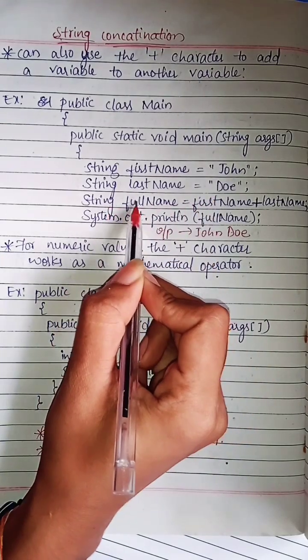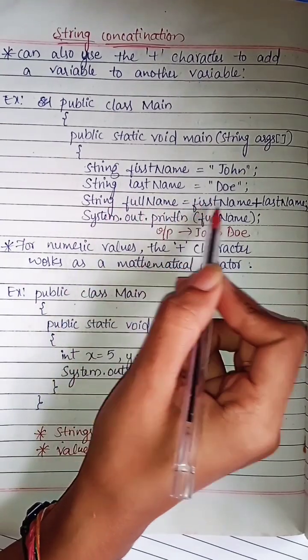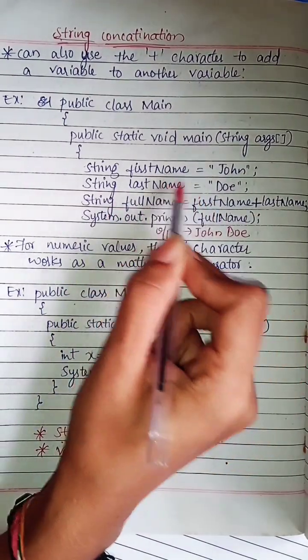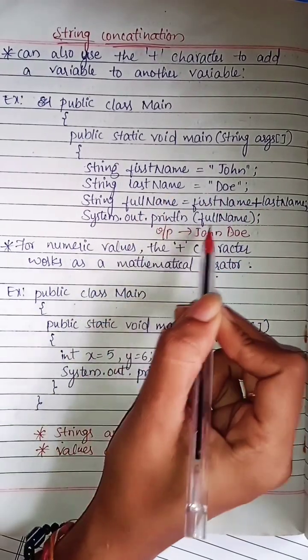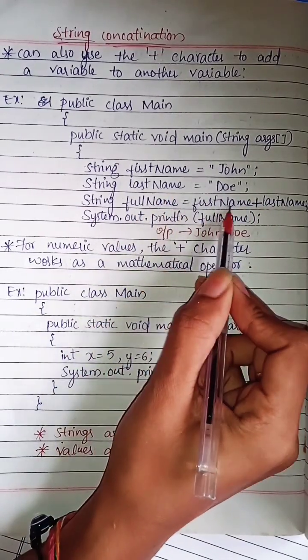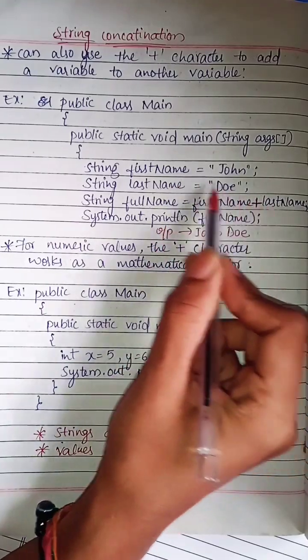is Doe. String fullName equals firstName plus lastName. firstName will refer to the first name variable and lastName will refer to the last name variable. System.out.println(fullName) refers to fullName and it is